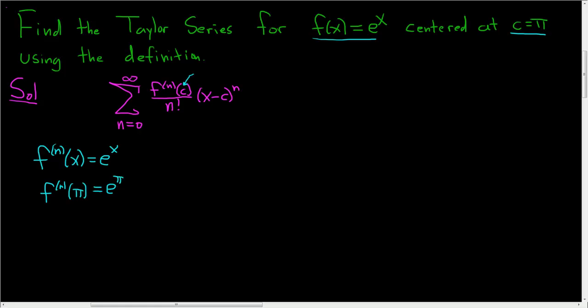And that's it. We're ready to finish. So this is equal to the infinite sum, as n runs from 0 to infinity. This piece here, that's the nth derivative at π, so it's going to be e^π. And then we still have the n factorial.